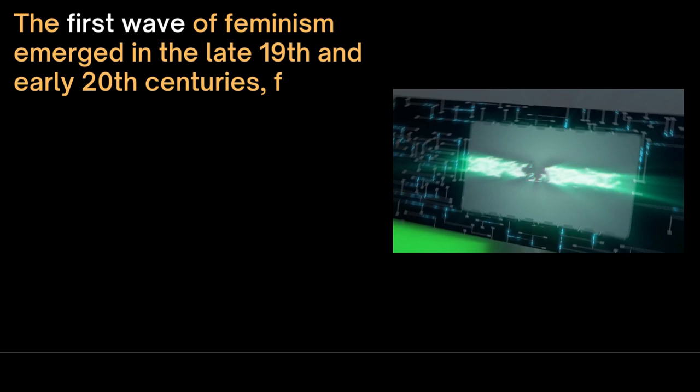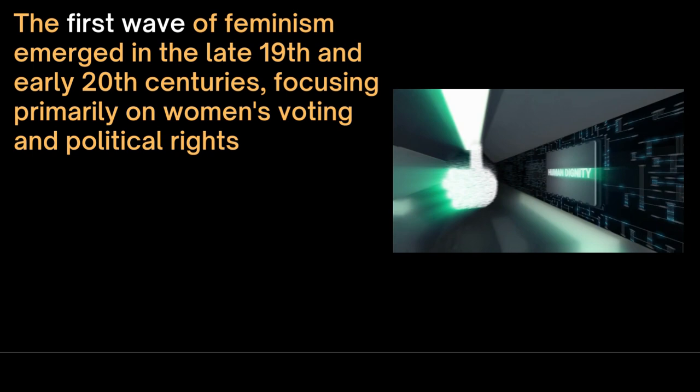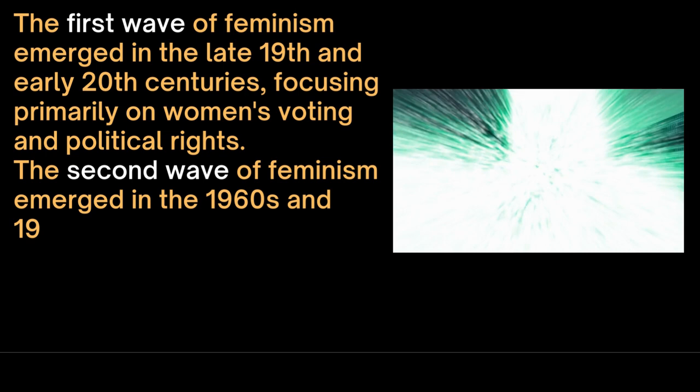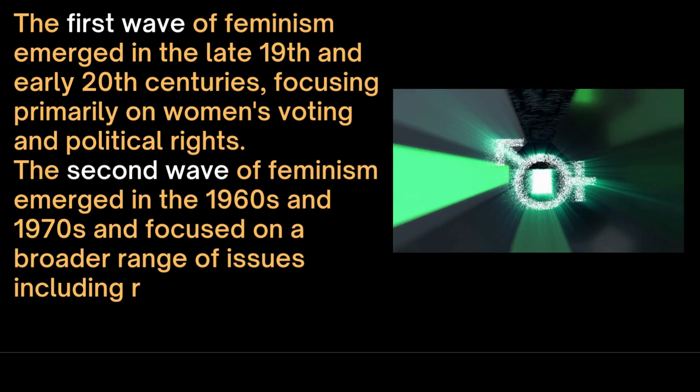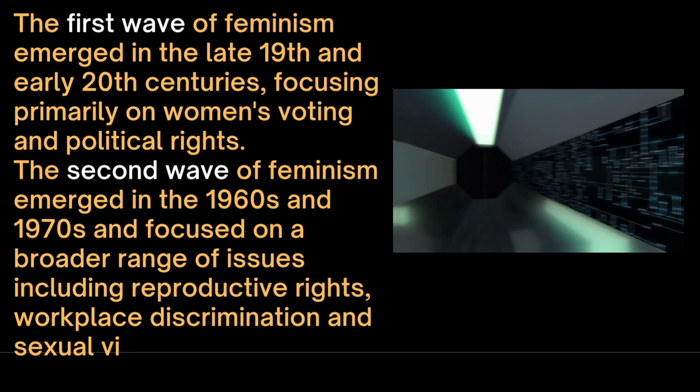The first wave of feminism emerged in the late 19th and early 20th centuries, focusing primarily on women's voting and political rights. The second wave of feminism emerged in the 1960s and 1970s and focused on a broader range of issues including reproductive rights, workplace discrimination and sexual violence.